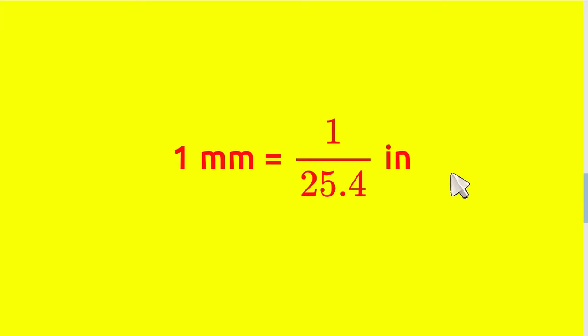So, the first thing that we need to know is the formula. And here is the formula: 1 mm equals 1 divided by 25.4 inch.